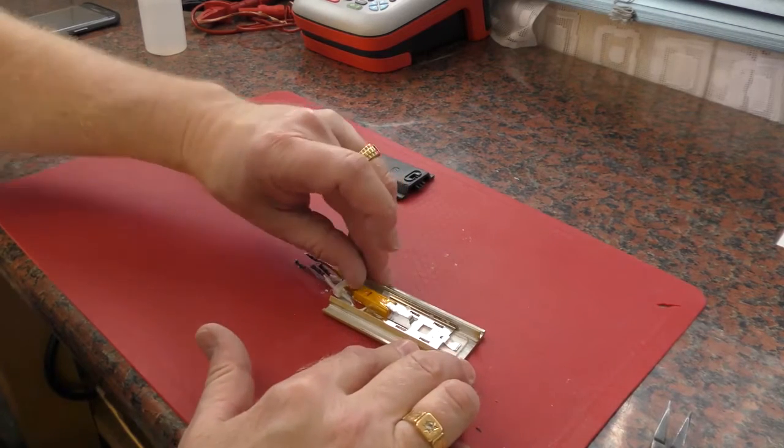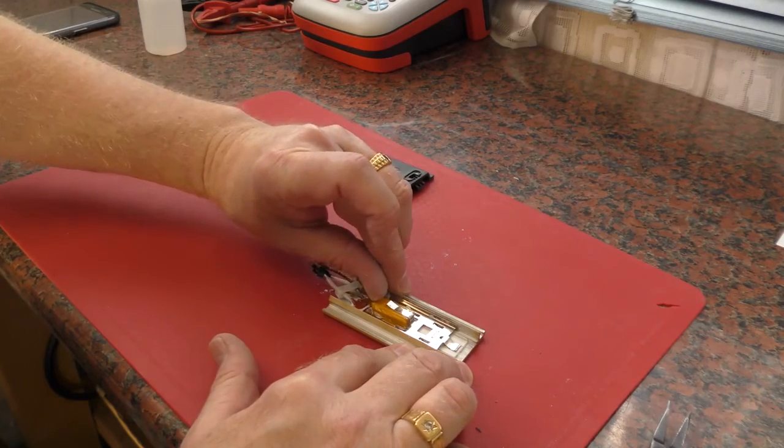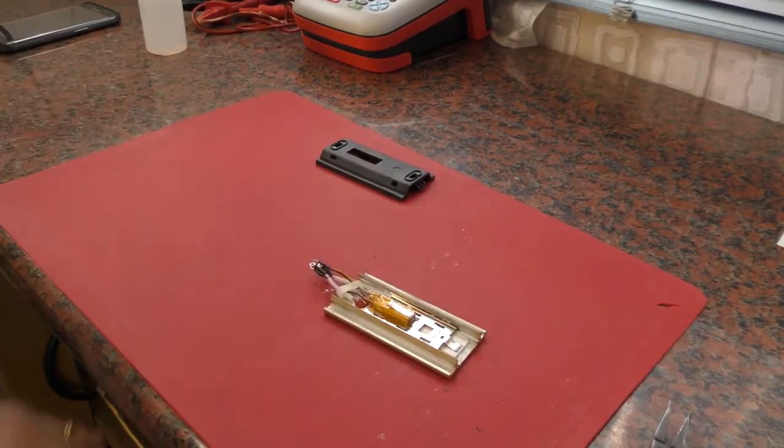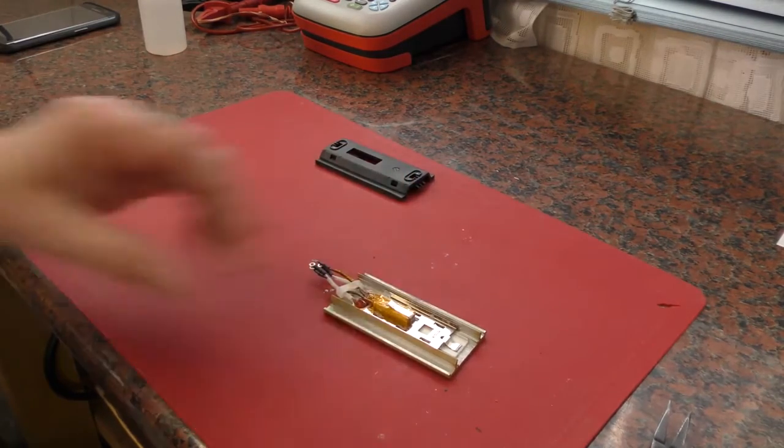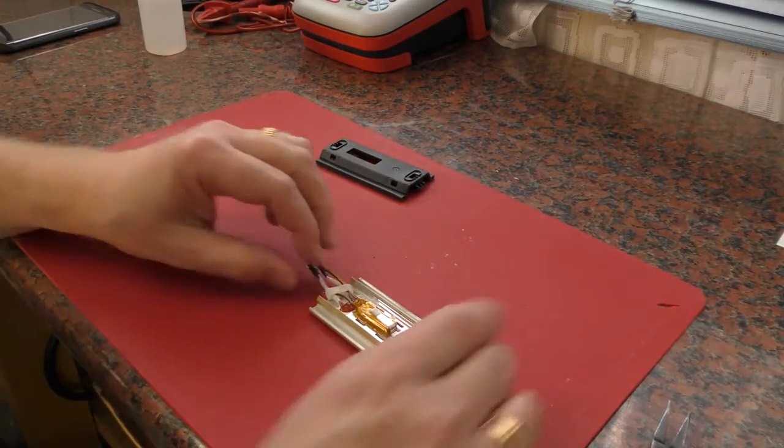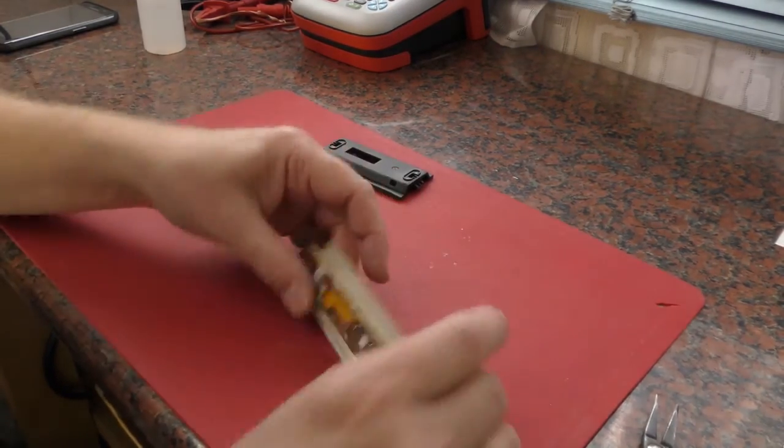You don't want to lift it any more than you need to to get that thermal fuse under there. Just slide that and you'll see it go in and go down, and that is in nice firm contact with that heating element. That should fail at the correct temperature if your iron should ever develop a fault.